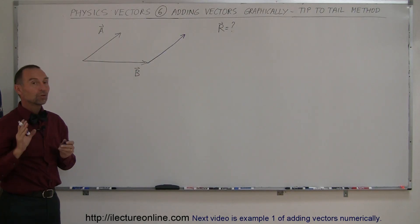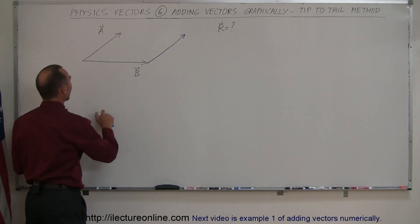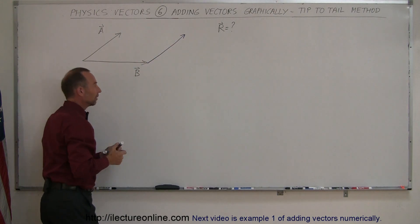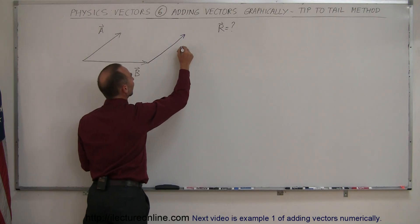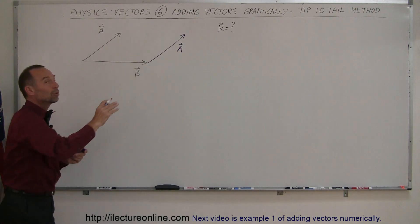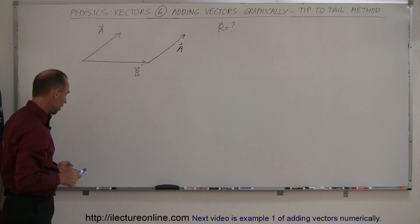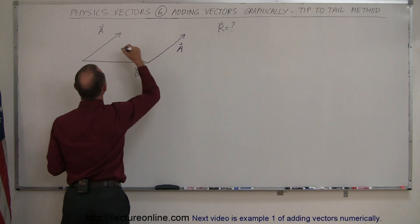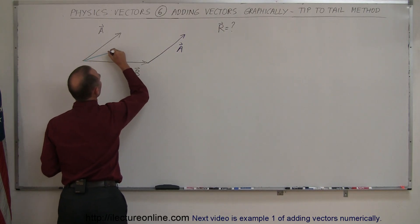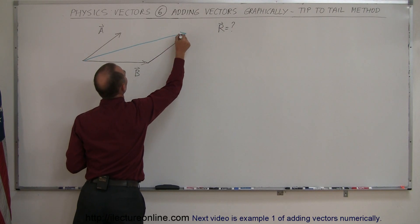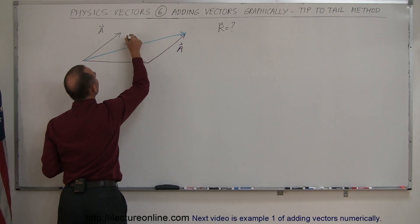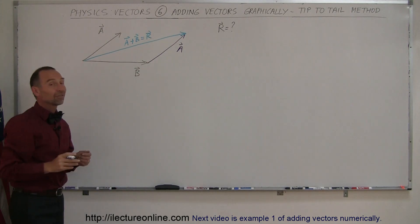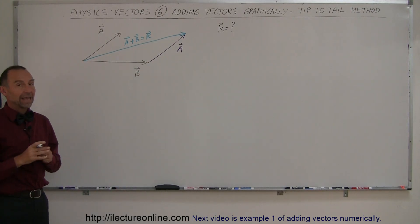Now, the resultant vector will be the vector I draw when I start from the tail of the first one to the tip of the last one. And let me mark this one down. This is still vector A, the exact same vector I had before simply moved over. And so now I'm going to draw my line from the tail of the first vector B to the tip of the second vector A. So, and this now becomes the sum of A plus B, which of course can now be written as the resultant vector. And that's another way in which you can add vectors together.